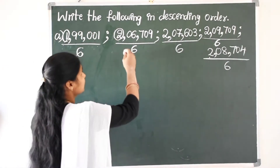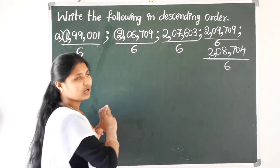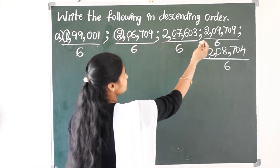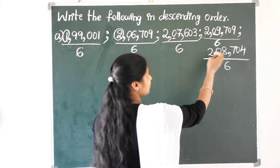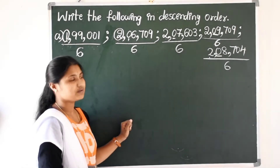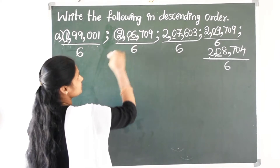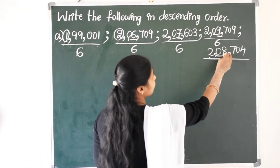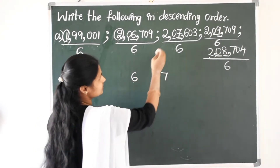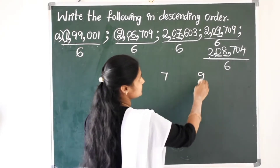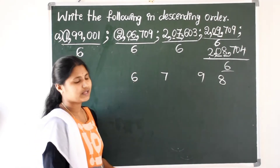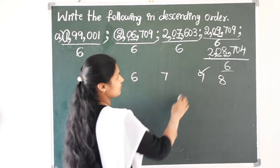See here. The lakhs place is same in all numbers. So, compare the 10,000th place. Here 10,000th place is 0, and in this number also 0, in this number also 0, and the last number also 0. So, compare the 1000th place value. All have different digits in the 1000th place: 6, and in this number 7, in this number 9, and in this number 8. So, which is the bigger number? 9 is the bigger one.